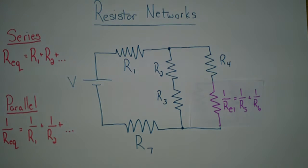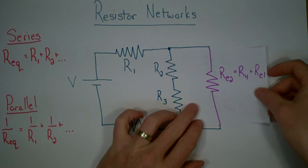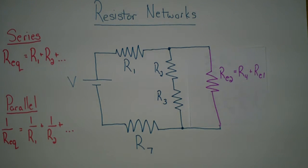To further simplify, we can see that R4 and RE1 are in series with each other, so that will be simplified to RE2, which equals R4 plus RE1.